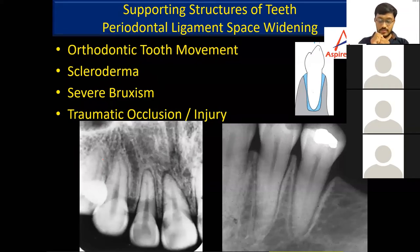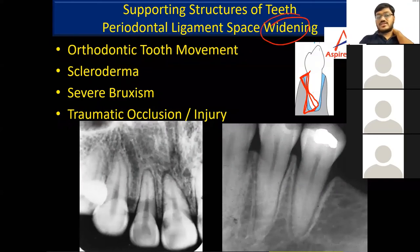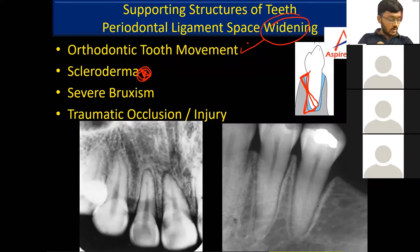Regarding the supportive structures of the teeth and the PDL: the normal shape of the PDL space is an hourglass appearance. Widening of the PDL space can be a normal finding such as during ongoing orthodontic treatment, or it can be seen in pathological conditions like scleroderma.